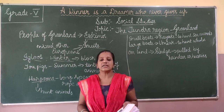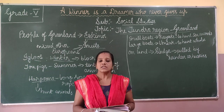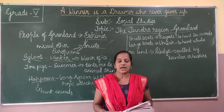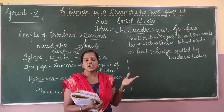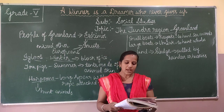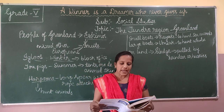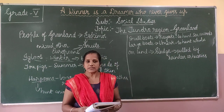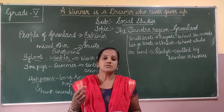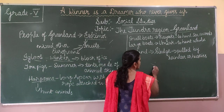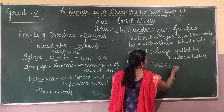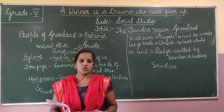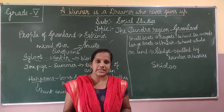Now they use rifles for hunting and motorboats for fishing instead of harpoons and small boats. They also use motorized sledges called skidoo — spelled S-K-I-D-O-O — which slide on the snow. So the lifestyle of the people living in Greenland has greatly changed.